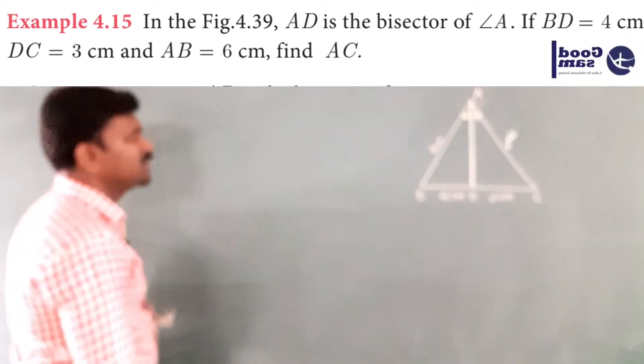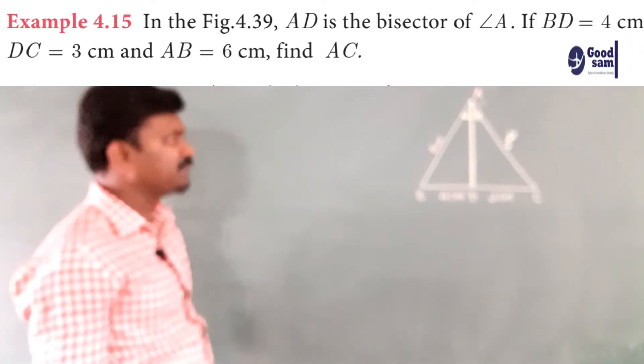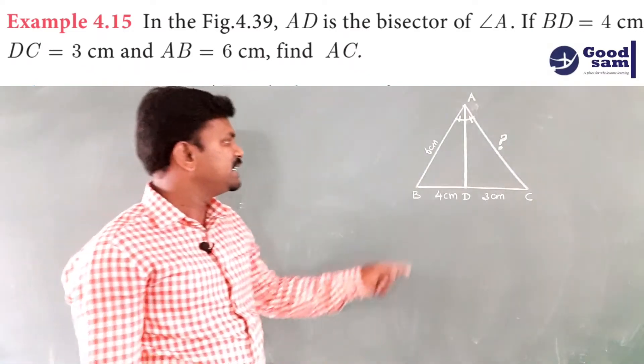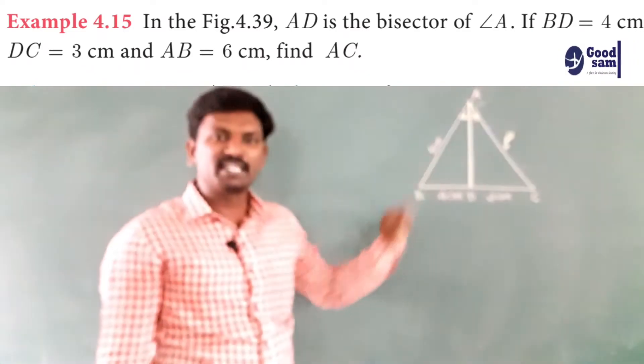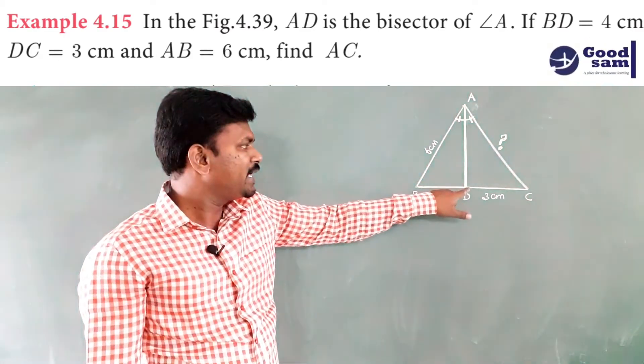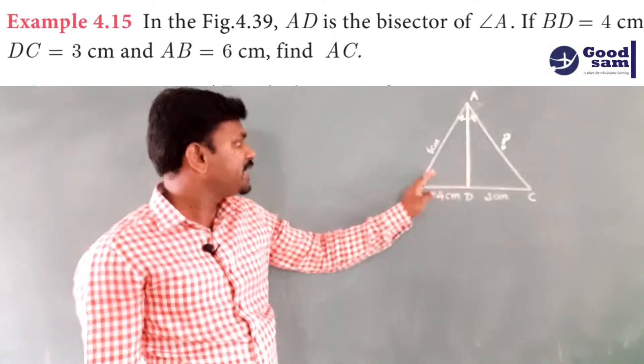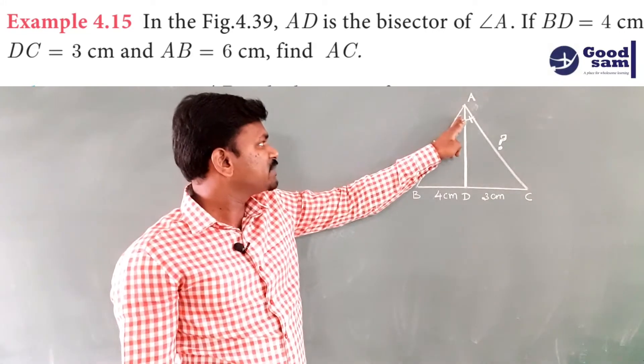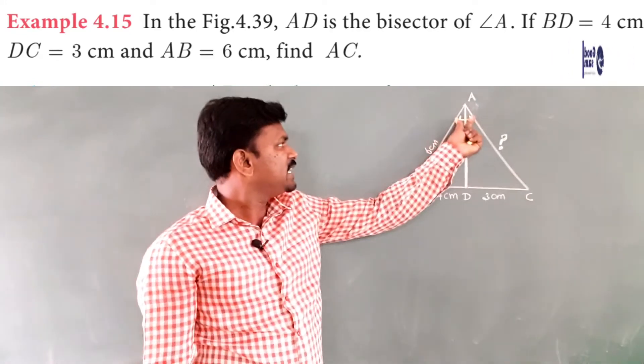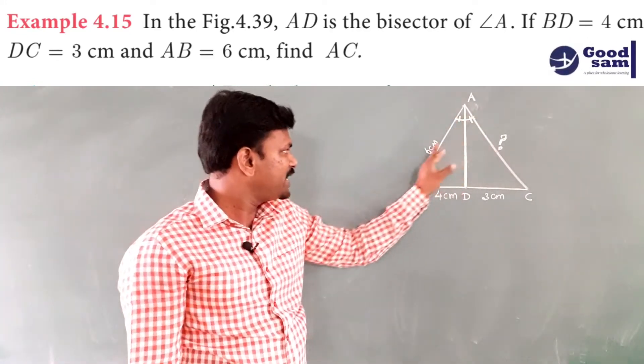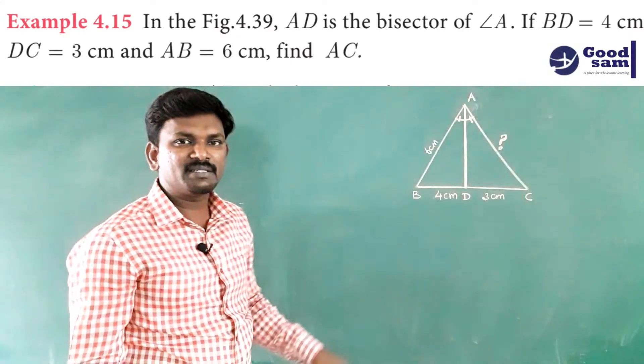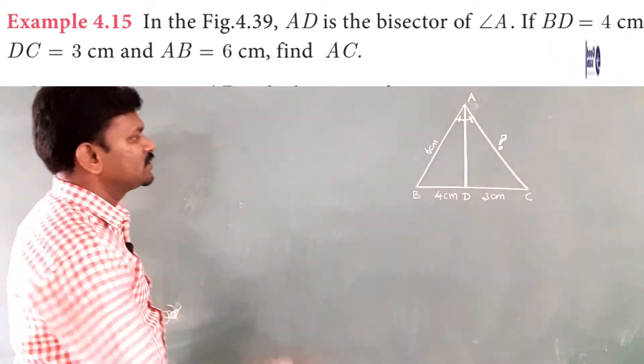Look here, we know the angle bisector theorem. The statement of the angle bisector theorem is an internal bisector of an angle of a triangle will divides the opposite side internally in the ratio of corresponding sides containing the angle. These are the corresponding sides and this is the angle which contains both the corresponding sides.